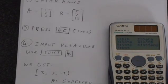So press shift 5. That gets us back to that menu. And we want vector B. So that's number 4. And then we press equals. And that gives us 3, 3, minus 3, exactly as we expected.